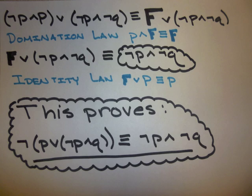After a lot of work and a lot of logical equivalences, we were able to prove that the negation of (P or (not P and Q)) is logically equivalent to not P and not Q.